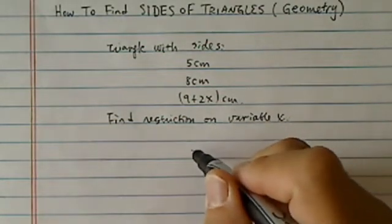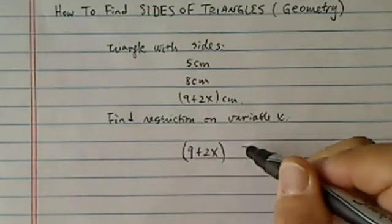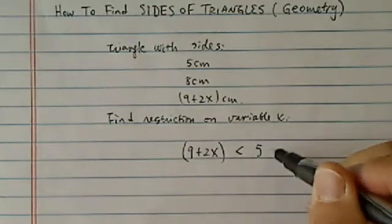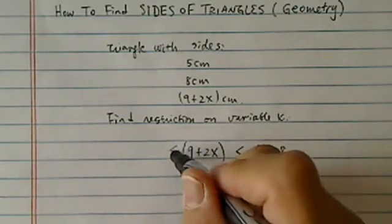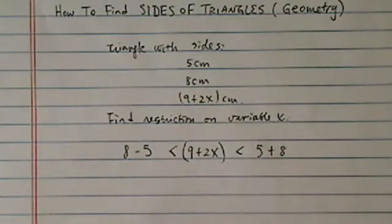There is a little theorem that says any side of a triangle has to be smaller than the sum of the other two sides, but it has to be greater than the difference of the other two sides.